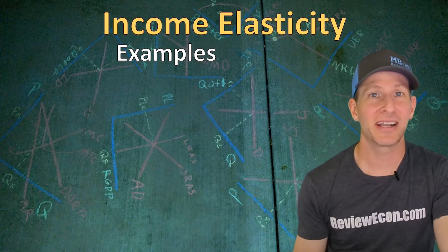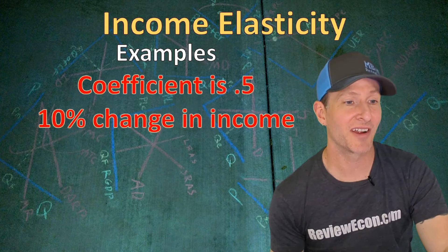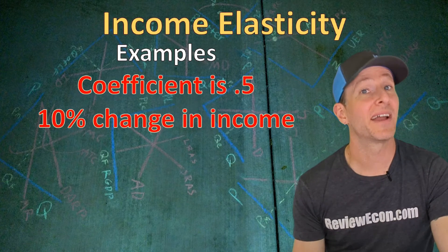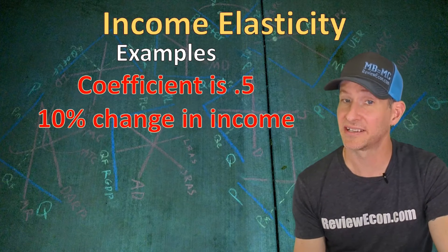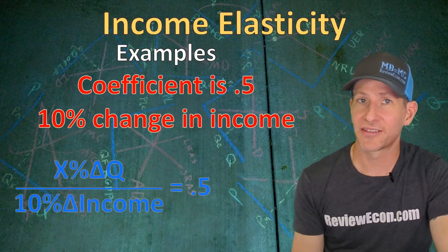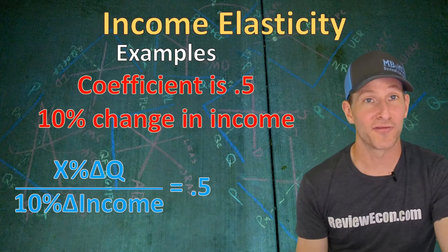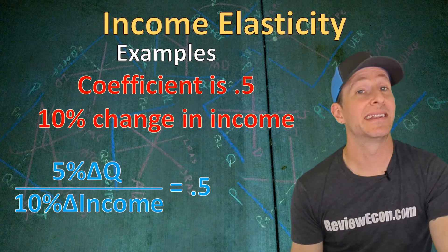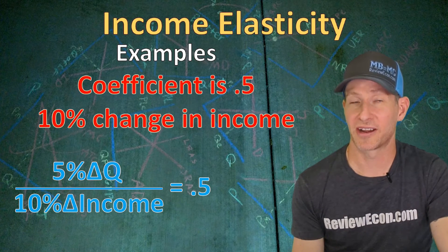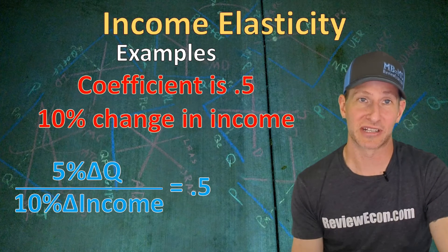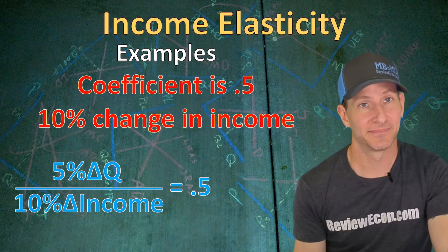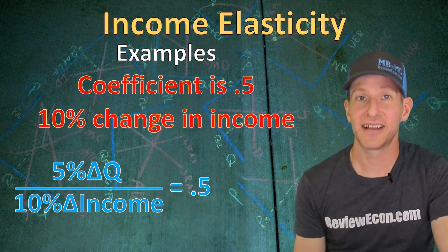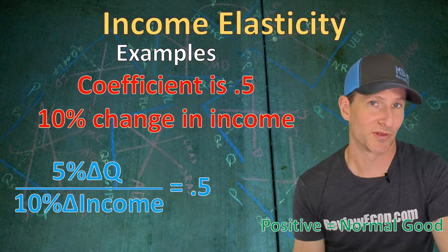We might also have to use algebra to find a missing variable. If we have an income elasticity coefficient of 0.5 and there is a 10% change in income, we plug that into the formula and solve for x — the percentage change of quantity. We determine it is a 5% change in quantity resulting from that 10% increase in income. Since the elasticity coefficient is a positive 0.5, this good is normal.